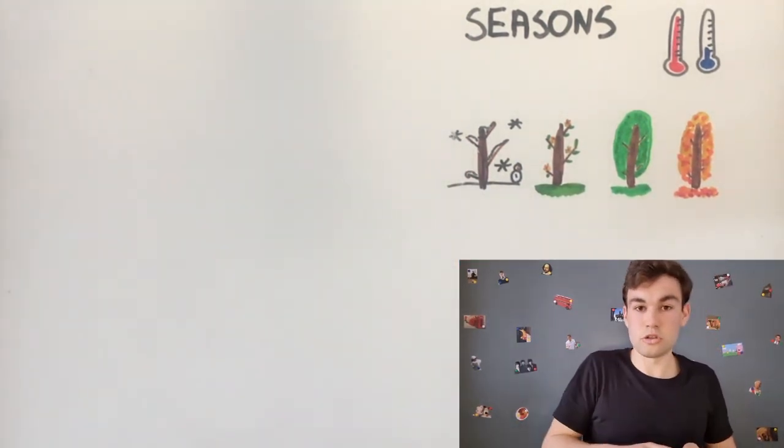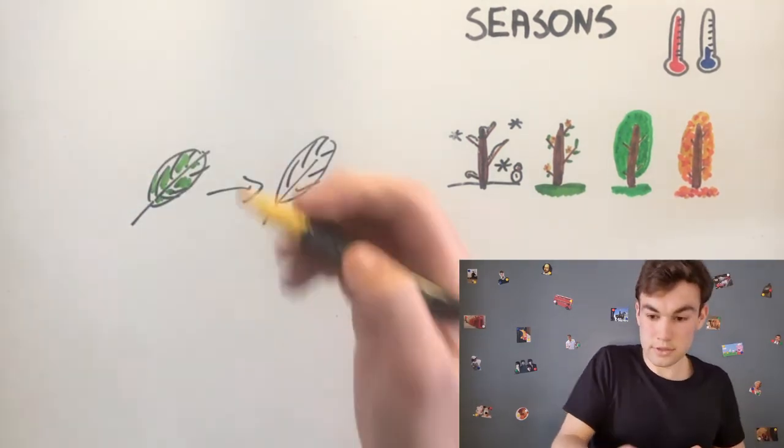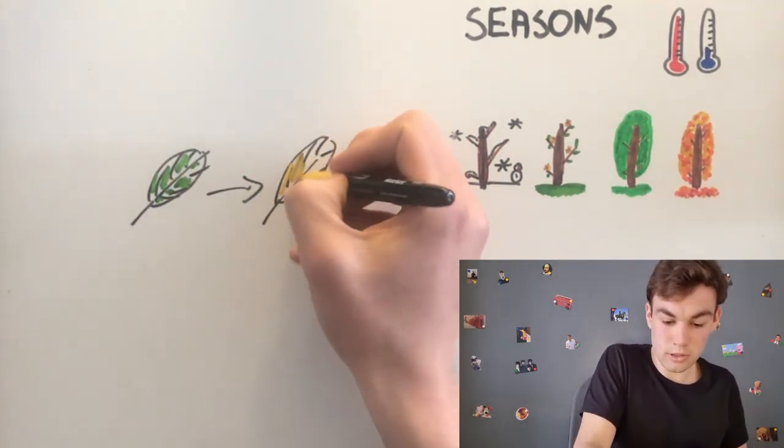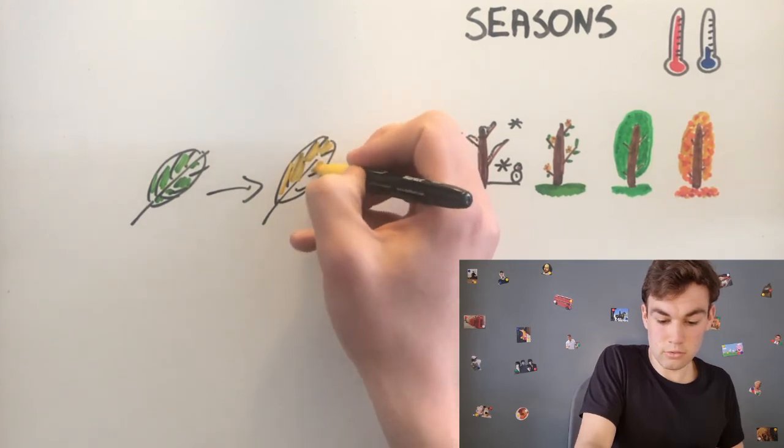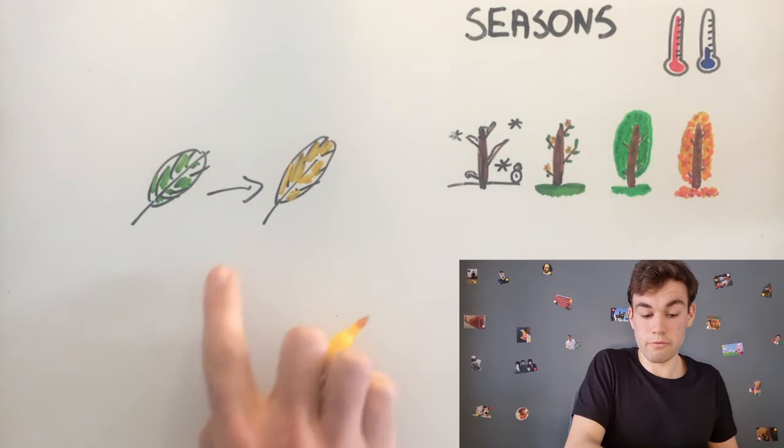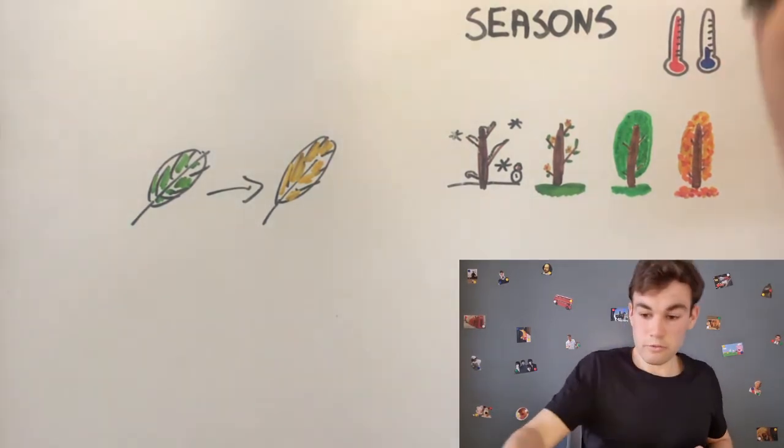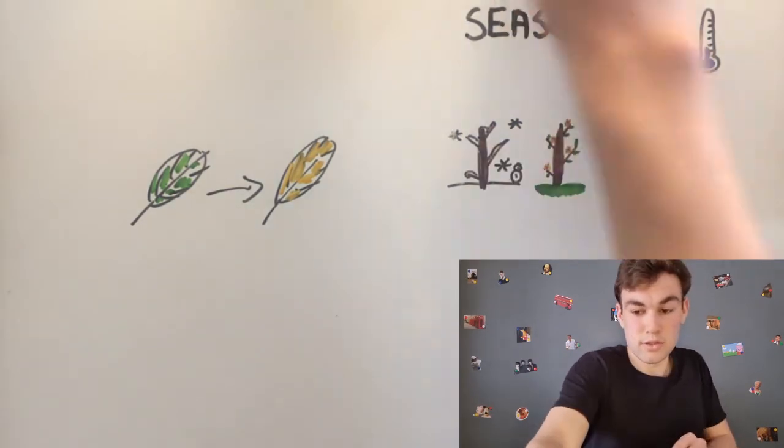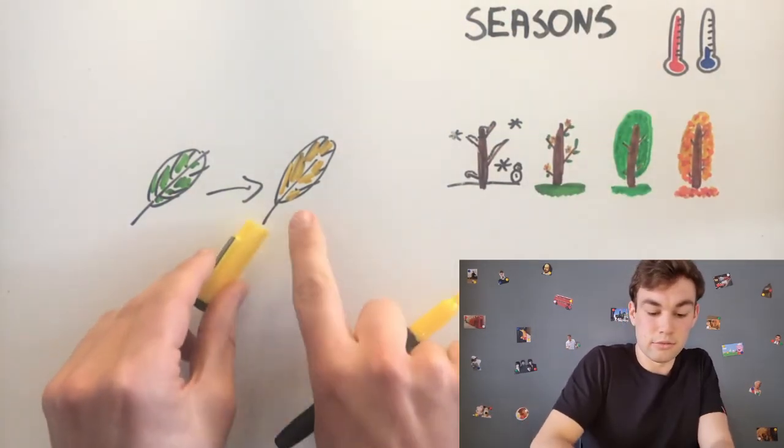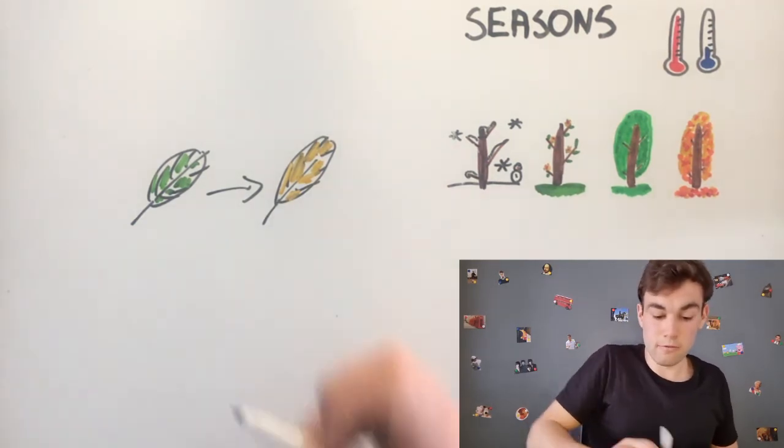During autumn, the leaves turn yellow. The leaves turn from green to yellow and then they fall off.